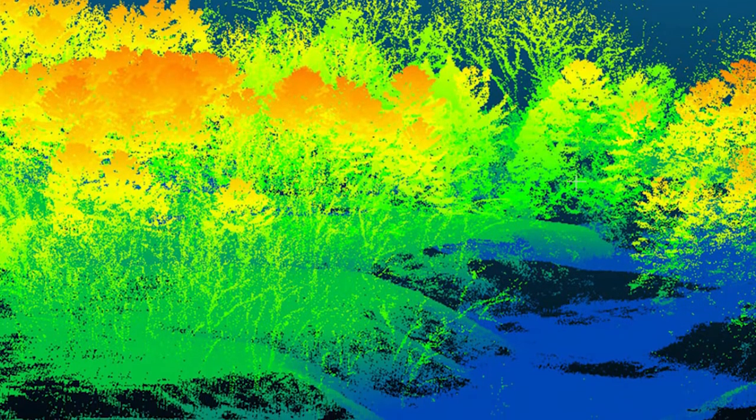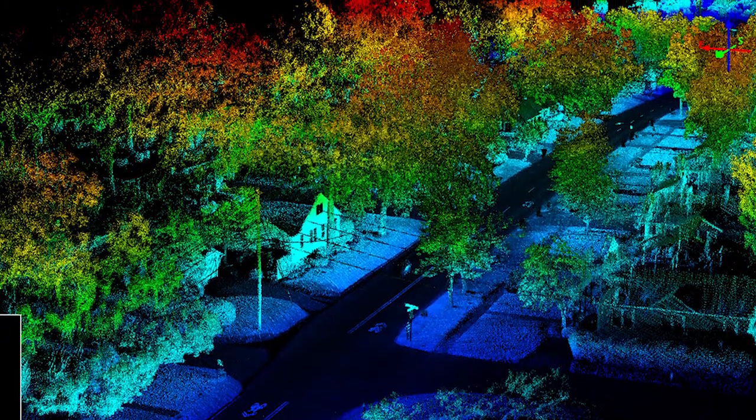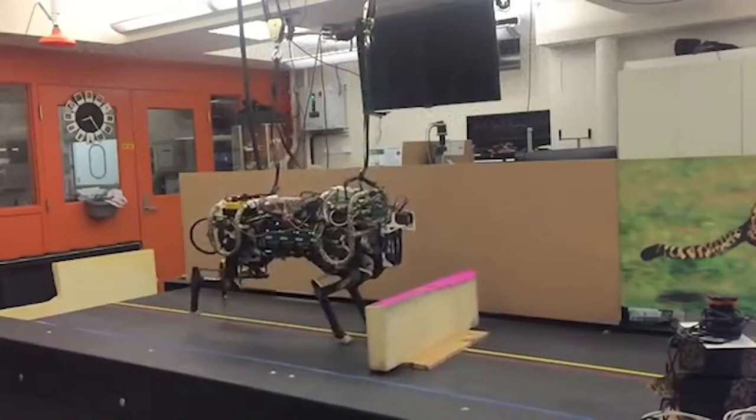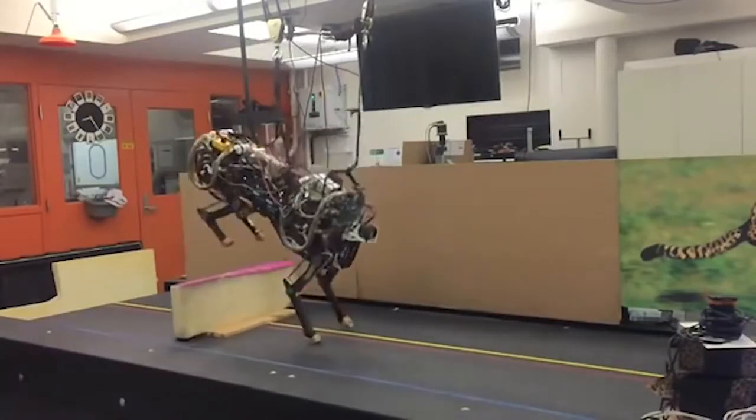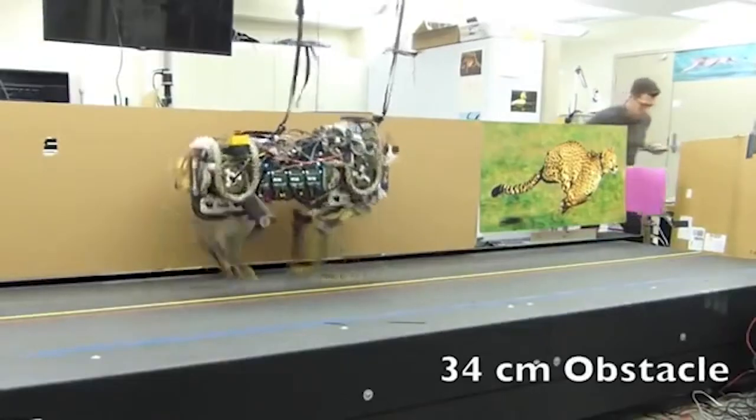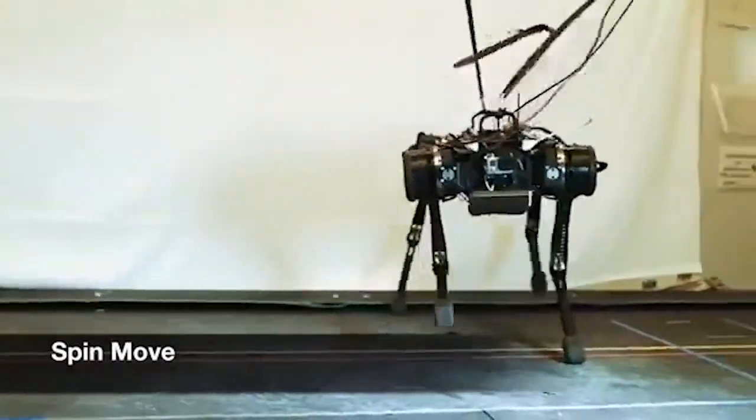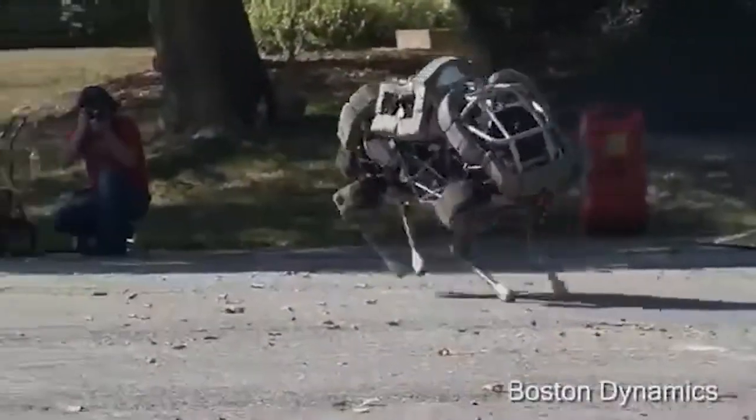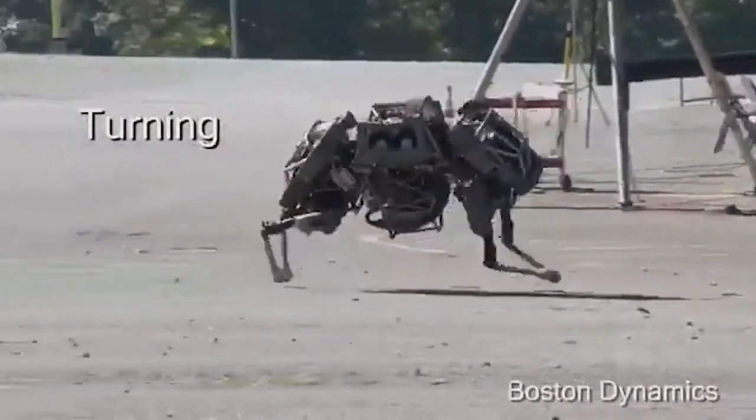Cheetah runs on a high-speed treadmill in the lab where a hydraulic pump powers it. A boom-like device makes it run in the treadmill's center. A new generation robot has come. Wildcat has come, which is designed to operate without any external support.